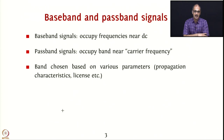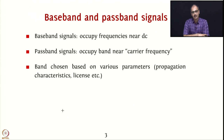What are baseband and passband signals? Roughly speaking, baseband signals are those that occupy frequencies near DC — they generally contain lower frequency components. Passband signals, on the other hand, occupy a narrow band of frequencies closer to the so-called carrier frequency, which is generally much greater than the bandwidth of the actual signal. As an example, 2.4 GHz may be the carrier frequency carrying data signals of 10 MHz bandwidth.